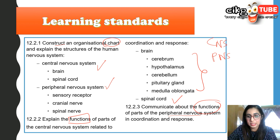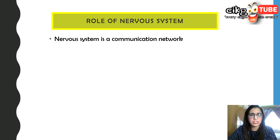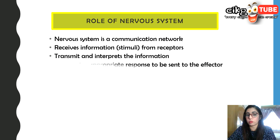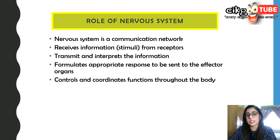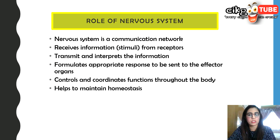Let's look at the role of the nervous system. The nervous system is a communication network. It receives information or stimuli from the receptors, then transmits and interprets the information, and formulates appropriate responses to be sent to the affected organs. It also controls and coordinates functions throughout the body, and helps in maintaining homeostasis, which we will see in the next chapter.